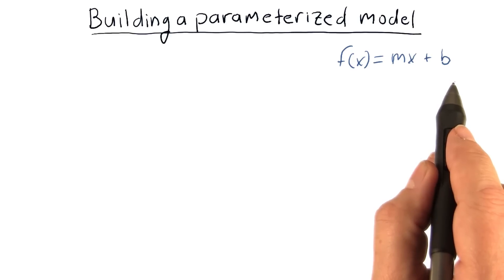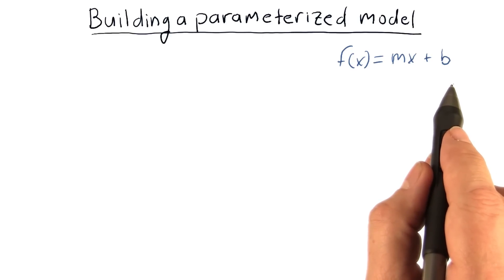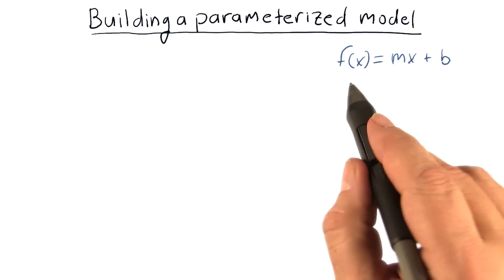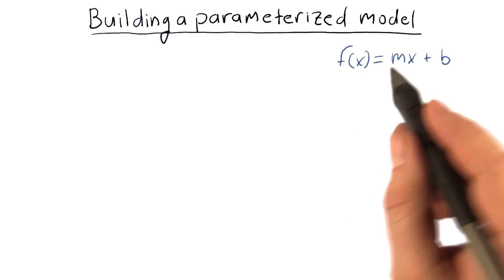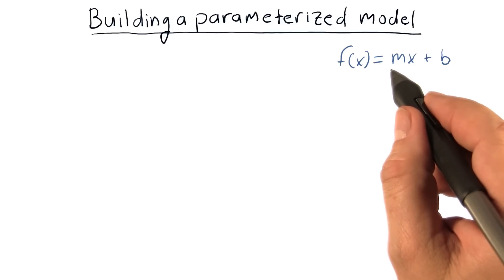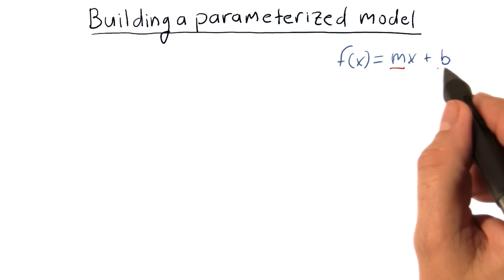What do I mean by parameterized model? This is an example of a parameterized model that you're probably familiar with from algebra. It's a function of x, and it has these two parameters, m and b.